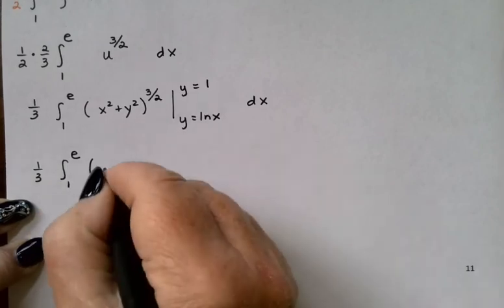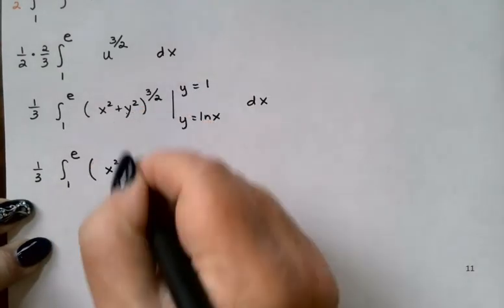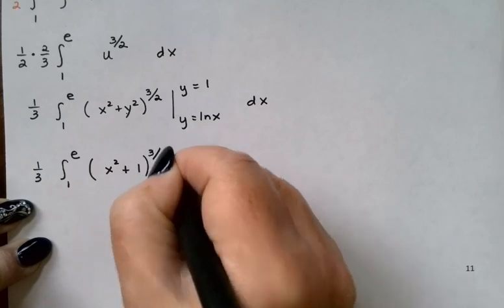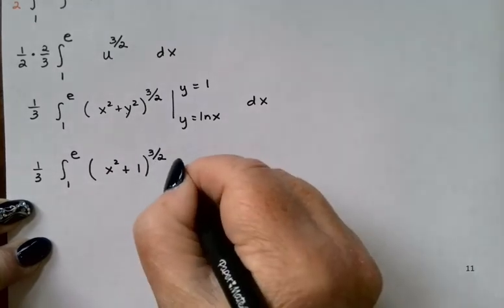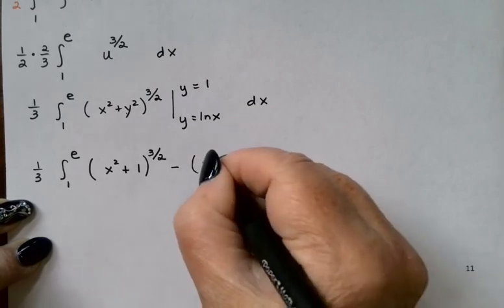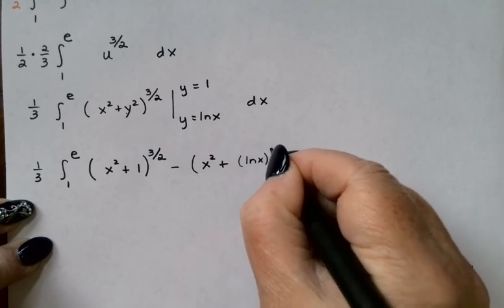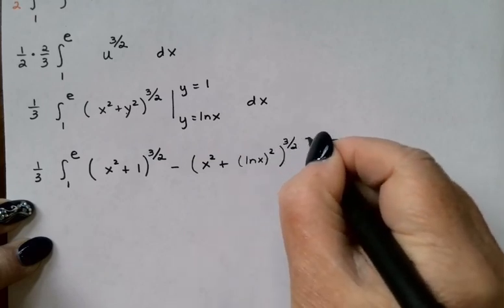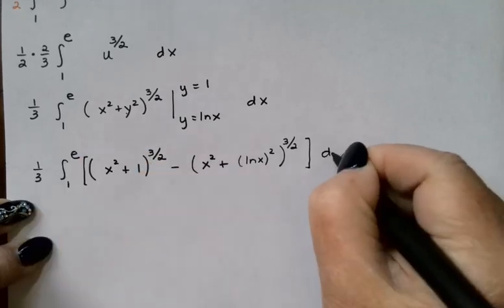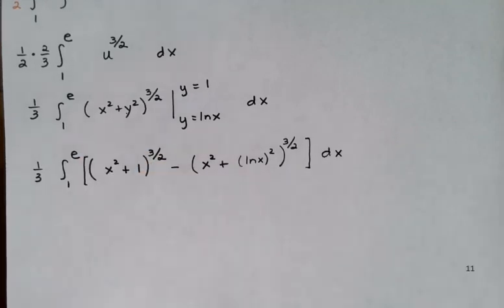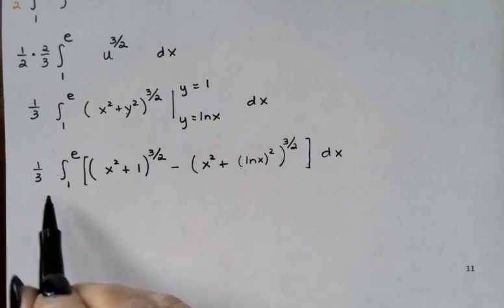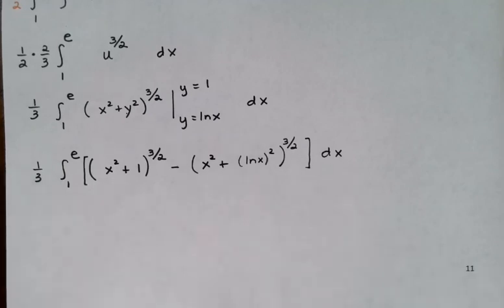Alright, plugging in I'd have x squared plus 1 squared is just 1 to the 3 halves subtract x squared plus ln x squared to the 3 halves and all of that now has to be integrated dx. This is a good example of one that I don't want to do by hand. In fact, probably can't. And so this, I'm just going to put that whole thing in my calculator including the multiplier of 1 third. Let me double check. I did that. Let me make sure I got the 1 third in there. I don't think I did.